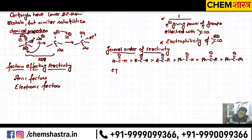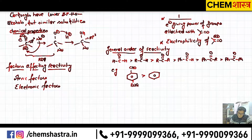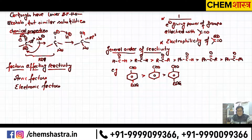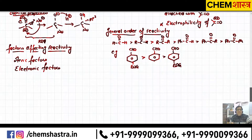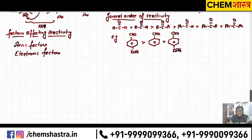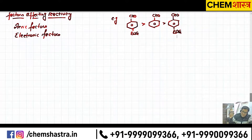For example with benzaldehyde: if there is an electron-withdrawing group on the CHO ring, it will be more reactive compared to plain CHO, and more reactive than when an electron-donating group is present. The withdrawing group pulls electron density away, increasing the positive charge on C, boosting reactivity. A donating group does the opposite — it reduces electrophilicity. So now the basic reaction pattern is understood.